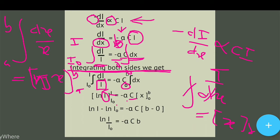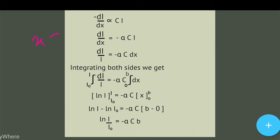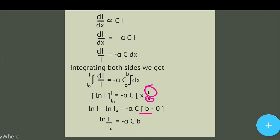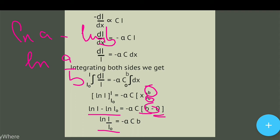यहाँ पे limits दिया है 0 to b, तो पहले b put करेंगे x के जगे पे, फिर minus करके 0 put करना है। पहले हम I put करेंगे, minus इसी function में हमें I₀ put करना है I के जगे पे। और हमें पता है ln(a) - ln(b) बराबर होता है ln(a/b), तो ln(I) - ln(I₀) को ln(I/I₀) करके लिख सकते हैं।